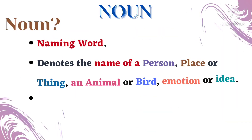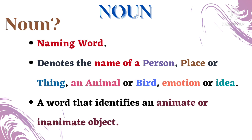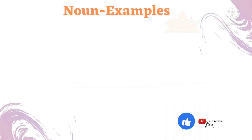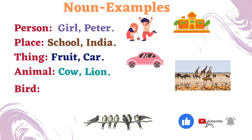What is a noun? A noun is a naming word. It denotes the name of a person, place, thing, animal, bird, emotion, or idea. It also means a word that identifies an animate or inanimate object — which means a word that identifies a living or non-living object. Look at the examples of noun.